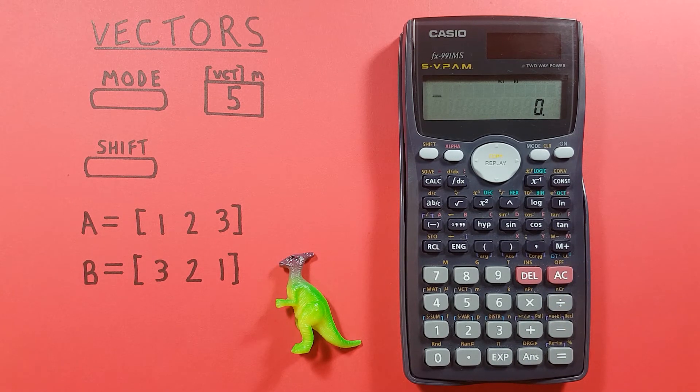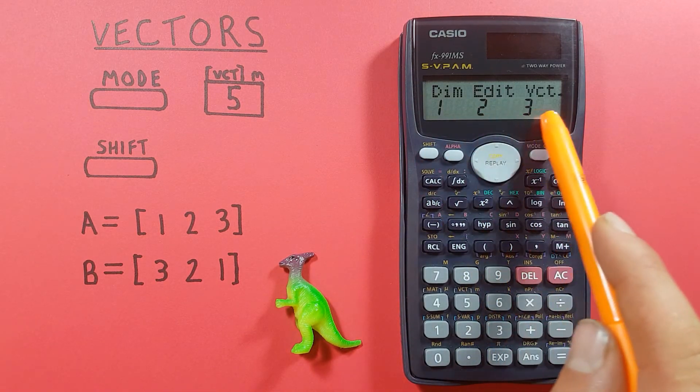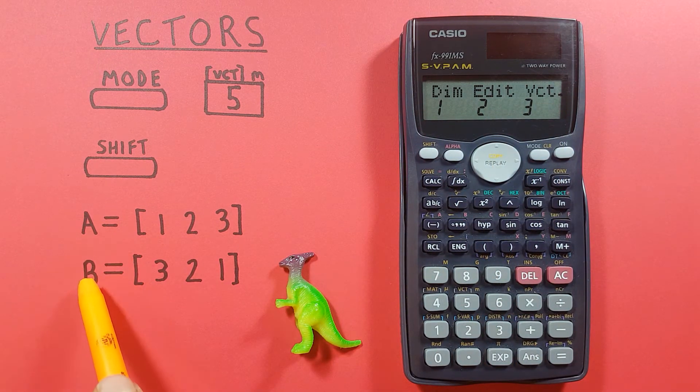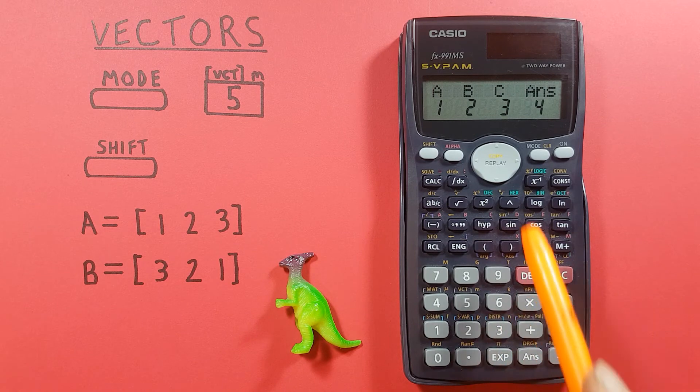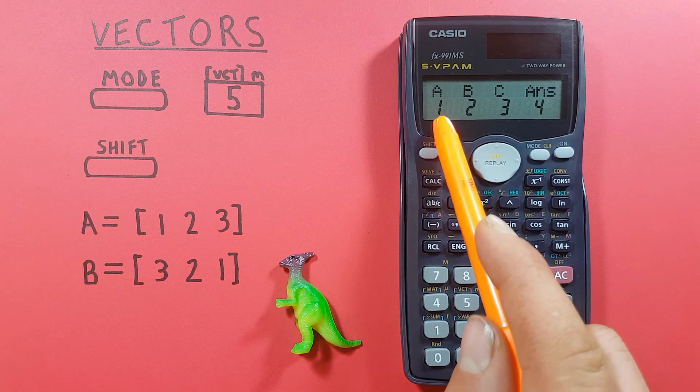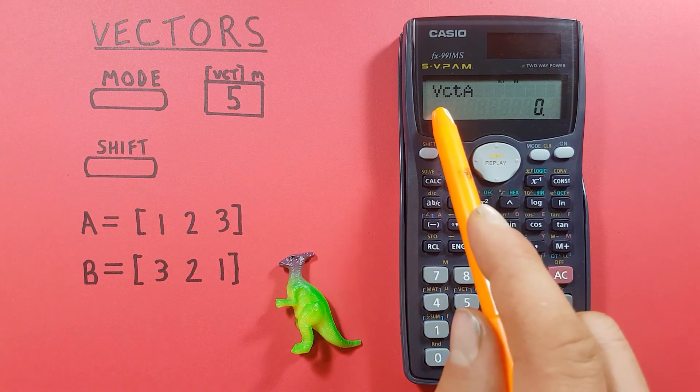You can also find the dot product of these two vectors again by pressing shift 5 to get to this menu. If we want to find the dot product of A and B, well first let's place vector A on the screen so we select the A vector.